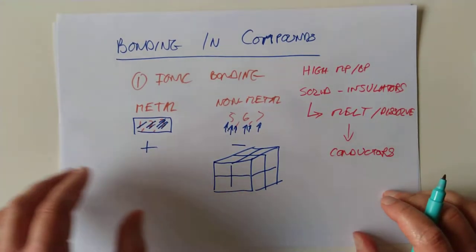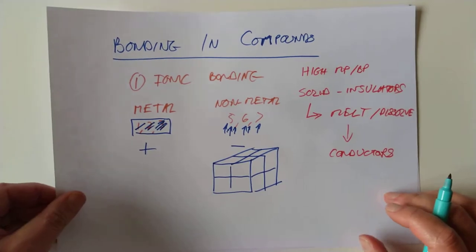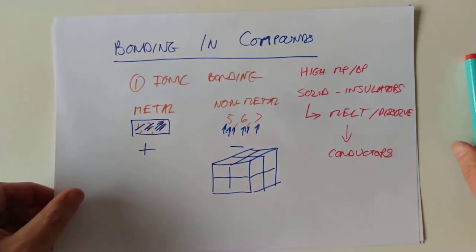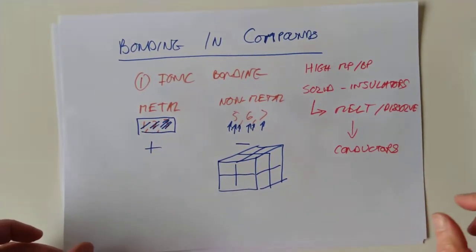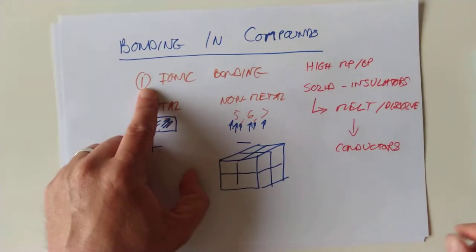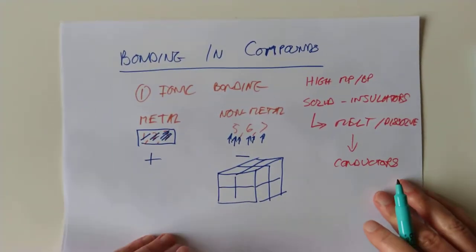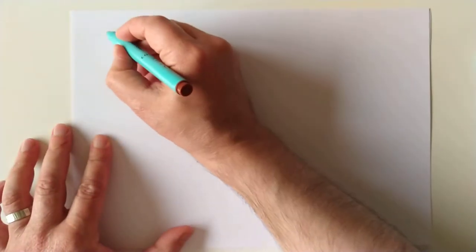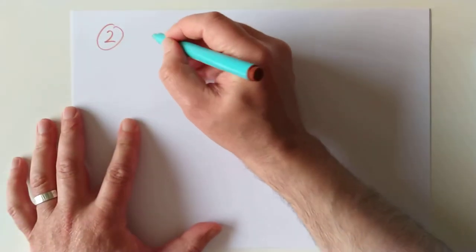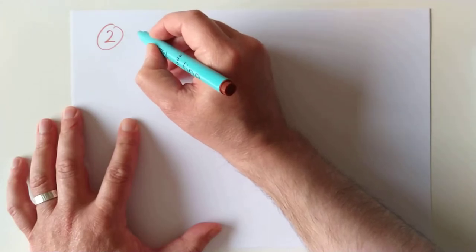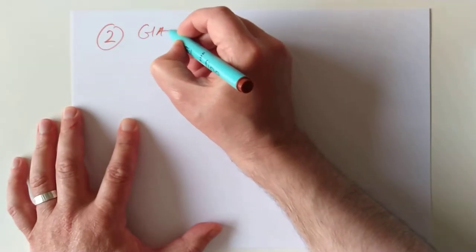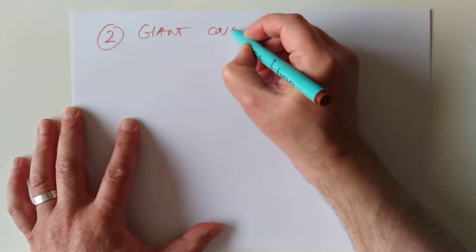That's just a summary of last year, so I won't bore with any more. Let's move on to our second type of bonding in compounds. That was number one. Let's move on to number two. And I'm showing my terrible lack of preparation again because I'm going to pause the video and I will go and get a nice diagram of a giant covalent network compound.